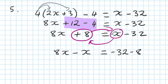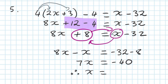Then I collect my terms: 8x minus x is 7x. So you're left with 7x is equal to minus 32 minus 8, which is minus 40. Then I divide by 7 on both sides. Therefore, x equals minus 40 divided by 7. Negative divide positive gives negative. You can use your calculator — minus 40 divided by 7 gives your answer straight away. Make sure you get the right process.